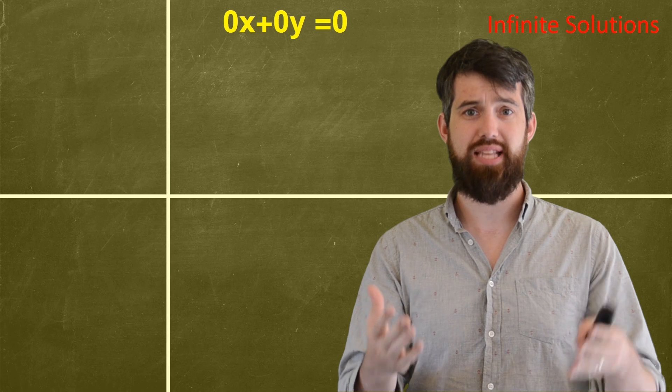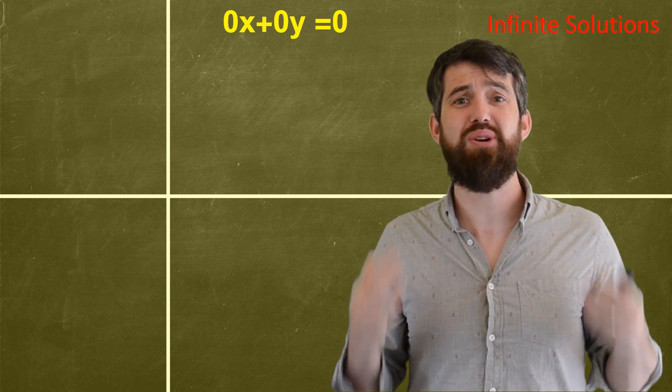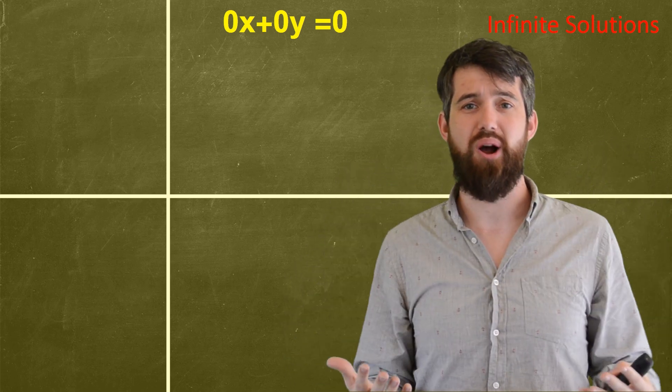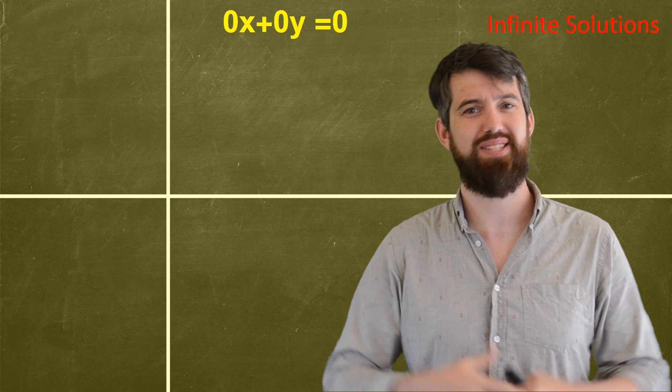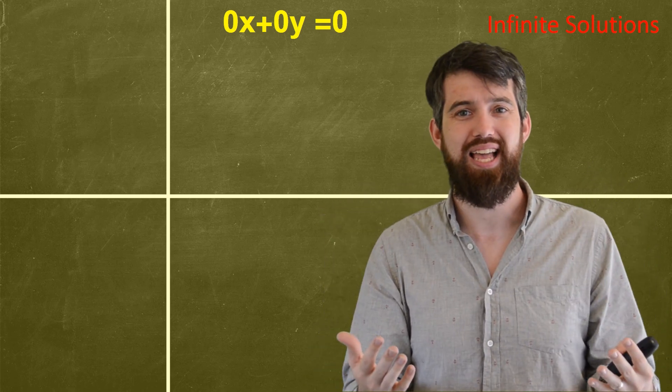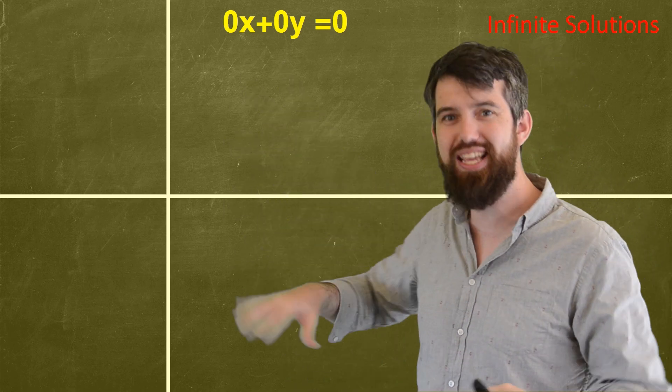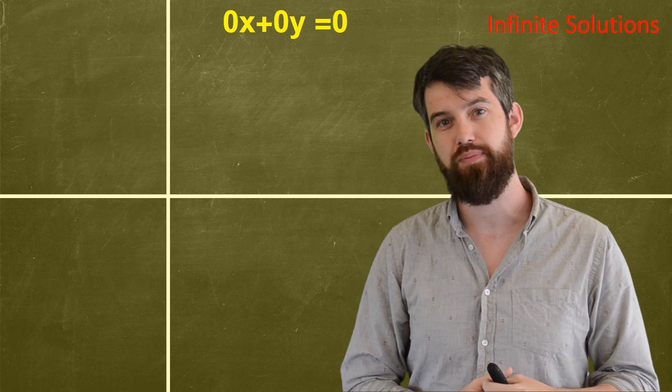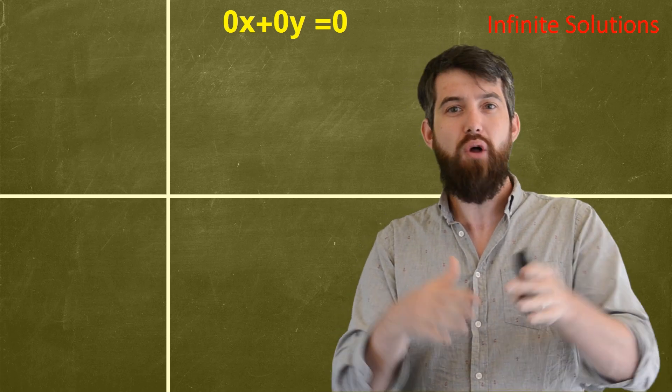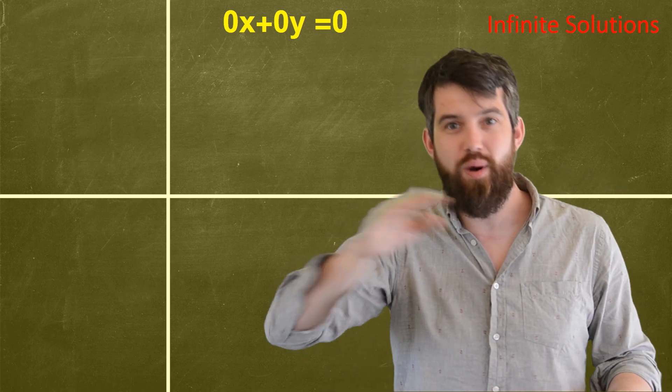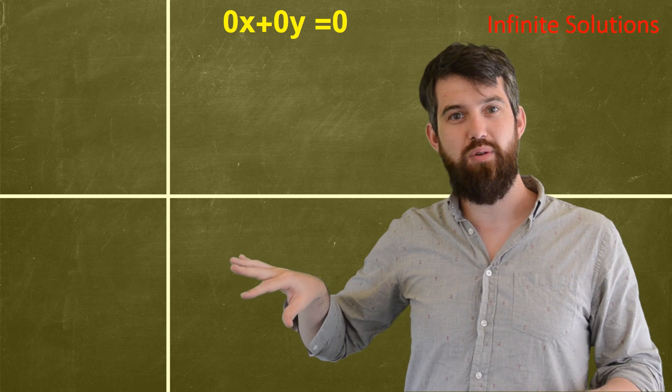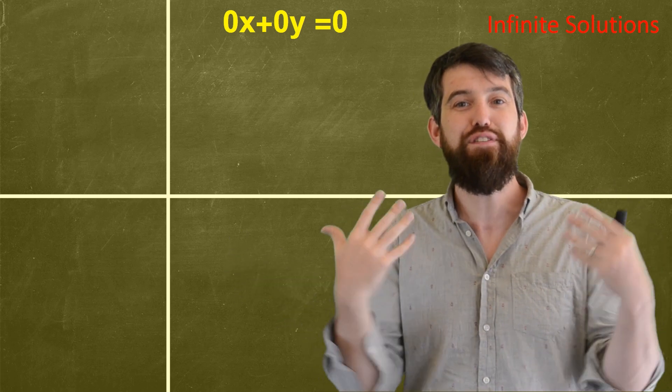A really pathological example is the equation 0x plus 0y is equal to 0. This doesn't matter what I put in here. It doesn't matter what the x is, it doesn't matter what the y is. Everything is a solution, so I sort of shade it in yellow to indicate that everything is a solution to this. I want you to note that in all the examples, whether it's a line or whether it's all of the points, that what we've described here is an infinite set of solutions.